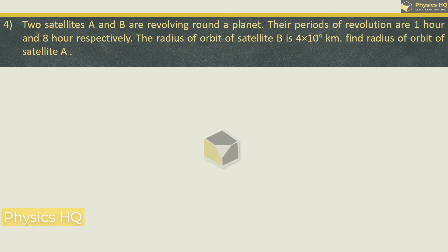Let us check out the next sum. Two satellites A and B are revolving around the planet. Their periods of revolution are 1 hour and 8 hours respectively. The radius of orbit of satellite B is 4 into 10^4 km. Find radius of orbit of satellite A. So here the time period of revolution formula is 2π root of R^3 upon GM. Now if you take the square, this becomes T^2 equal to 4π^2 R^3 by GM. And G is constant and mass of earth is also constant.